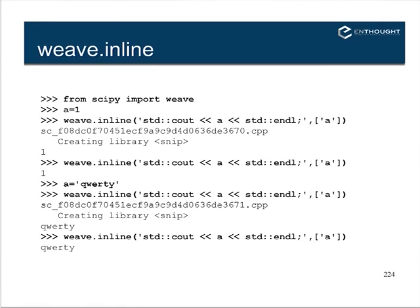If you call the function a second time, it's already compiled so there's no recompile step. What happens if you set A equal to a string? C++ is not a dynamic language like Python — when you declare a variable as int, it has to be an int. So it calls the function, finds out it was a string when it expected an int, and is smart enough to recompile. It keeps track of two versions of the same function: one for integers, one for strings. If you kill the application and restart, there will be a slight pause to find and load the external module, but no recompile step.